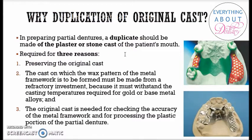Sometimes when fabricating a partial denture, you need to duplicate this dental cast. There are three reasons for duplication of the original cast. The first reason is preserving the original cast — you preserve the original cast and use a duplicated cast for different lab procedures.